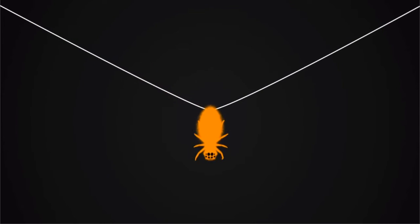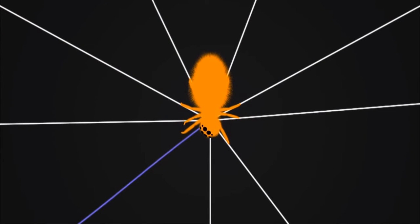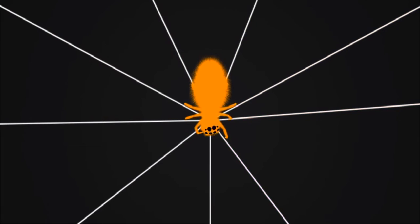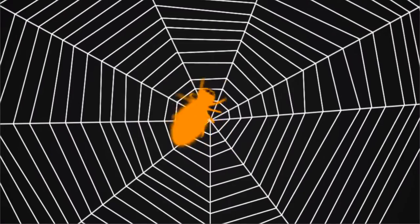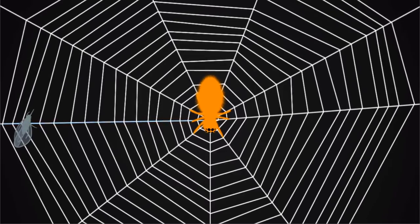When a spider builds its web, something extraordinary happens. The spider tunes individual strands of silk by stretching or shortening them. Each strand vibrates at a different frequency. When a bug hits the web, the spider can triangulate where it is by sensing the pattern of the vibrations.